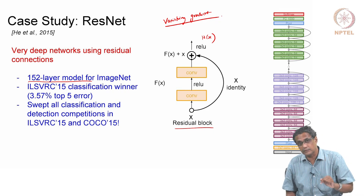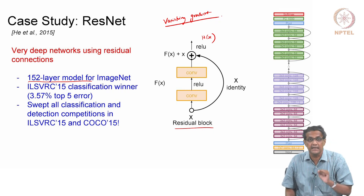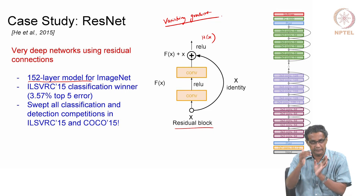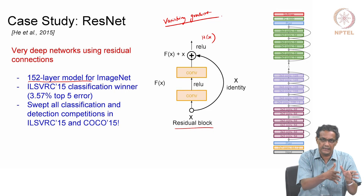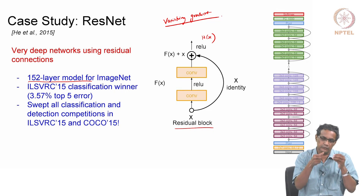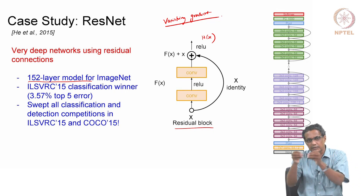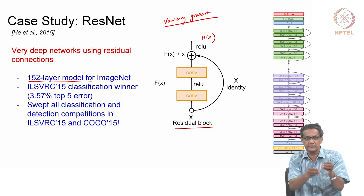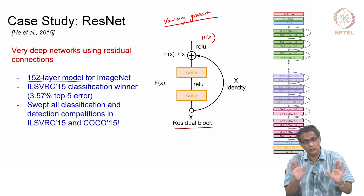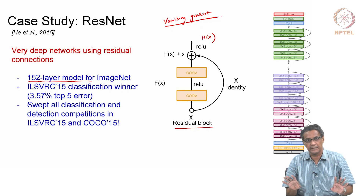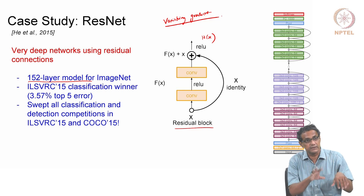But then what they realized was it was not working even on the training data. If it is overfitting, then on training it should do well — that is when you say it is overfitting. It fits very well to training data, and the moment you give an example which is a little different, it completely fails. That was not what was happening. What they found was it was not an overfitting problem because in the training error itself it was doing badly.